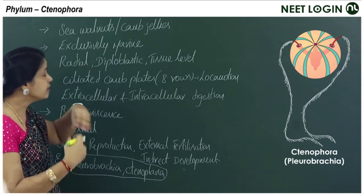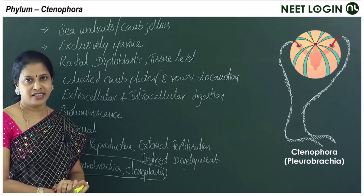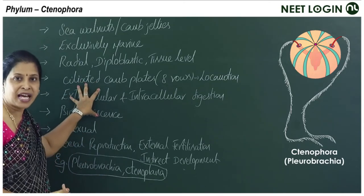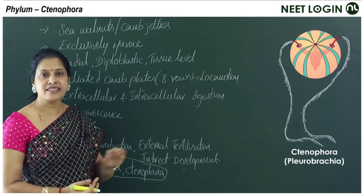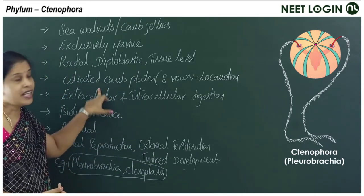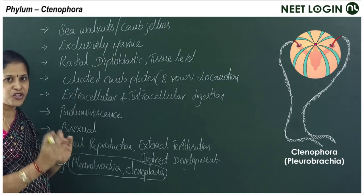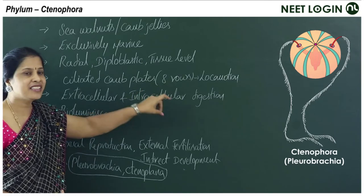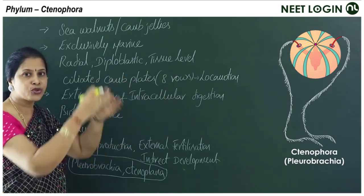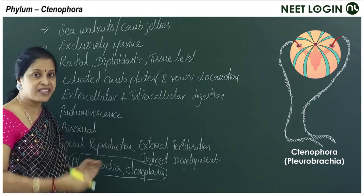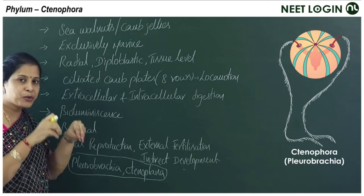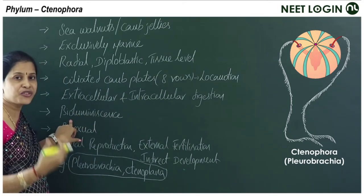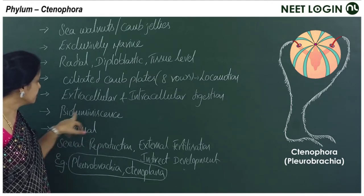Ctenophora differs from Cnidaria in that cnidoblasts or cnidocyte cells are absent in ctenophorans. Instead, they have a special feature: eight rows of external ciliated comb plates, which are characteristic of this phylum. These ciliated structures are helpful for locomotion.